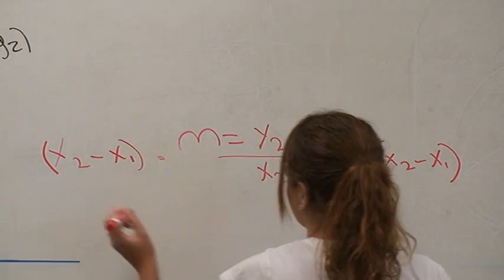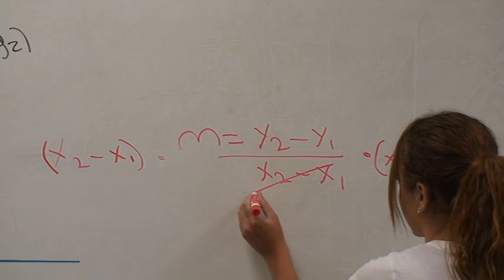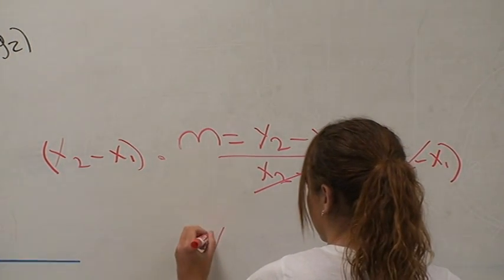By doing this, the x2 minus x1 on the right cancel. We then rewrite our equation with what we have.